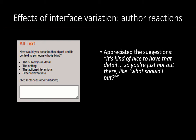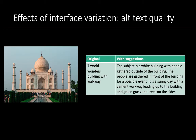For example, here I have a photo of the Taj Mahal. The original alt text that one participant wrote was '7 World Wonders Building with Rockway,' which omits key information and details. Then, when they authored alt text with one of our interfaces that presented suggestions, their alt text was: 'The subject is a white building with people gathered outside. The people are gathered in front of the building for a possible event. It's a sunny day with a smooth walkway leading up to the building and green grass and trees on the sides.' Though this still omits the name of the building, it's much more detailed and describes all elements of the image.